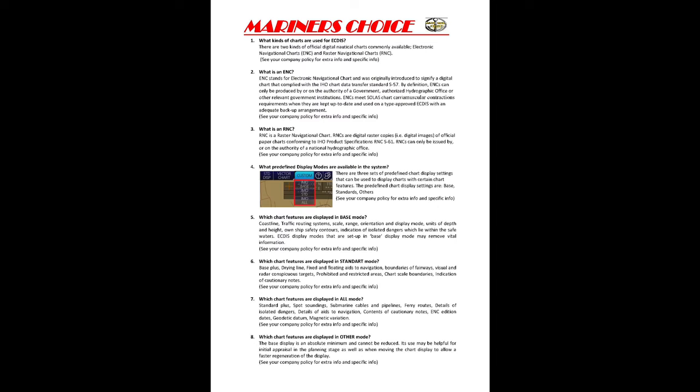So what kind of charts are used for ECDIS? In ECDIS we have only two kinds of charts: one is known as ENC, that is Electronic Navigational Charts, and the other is known as RNC, that is Raster Navigational Charts.